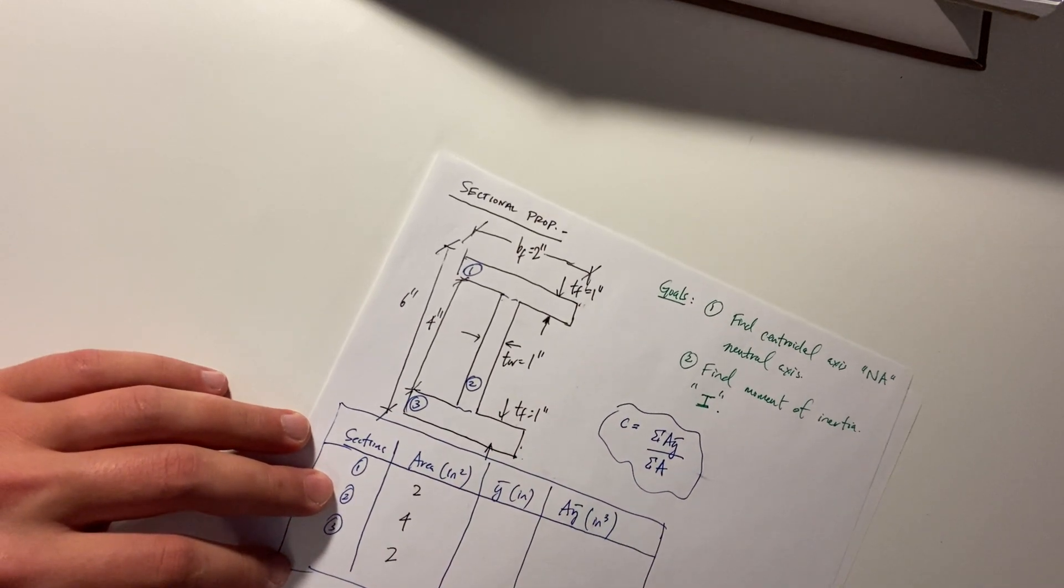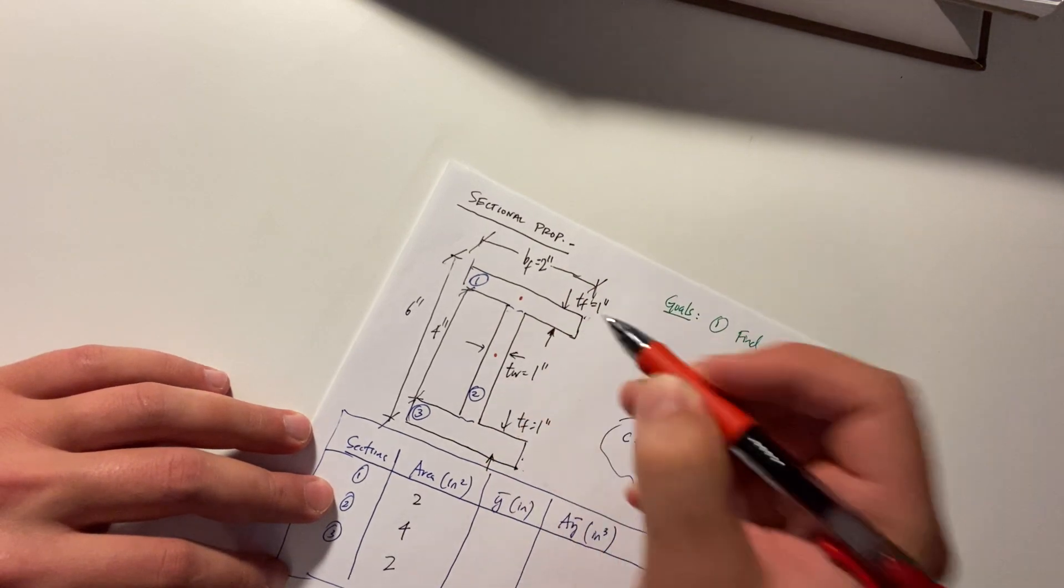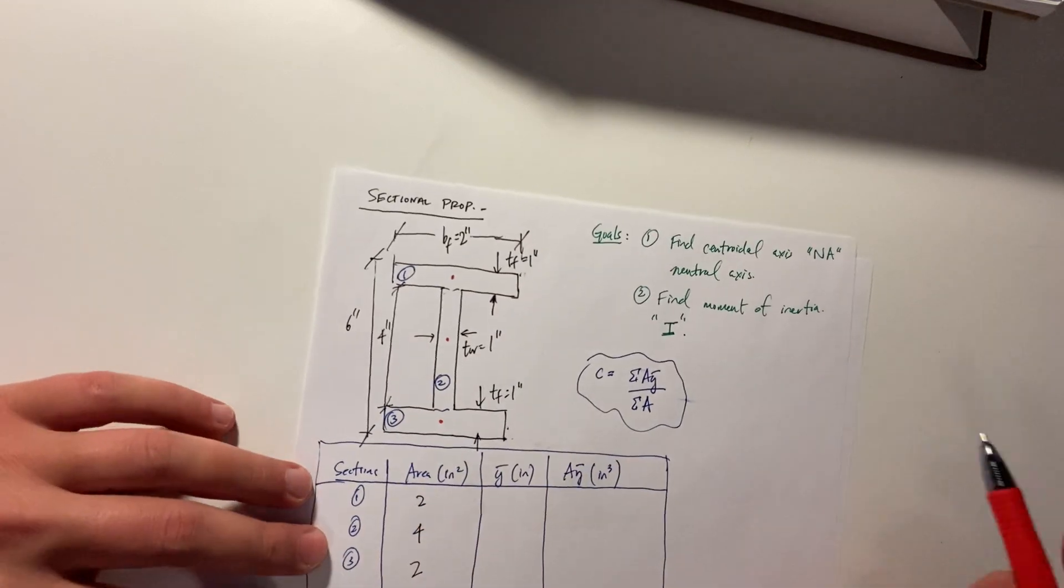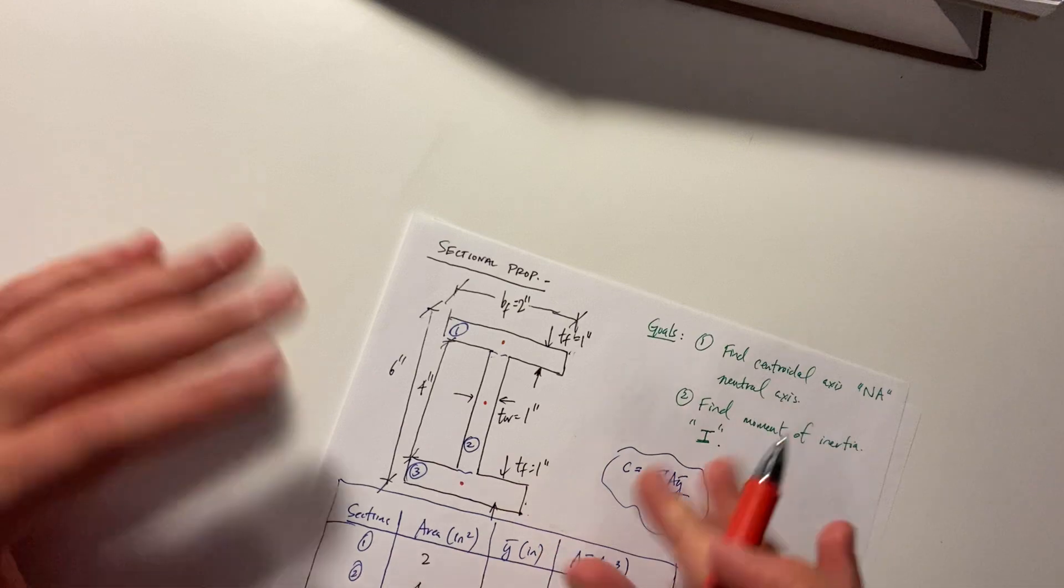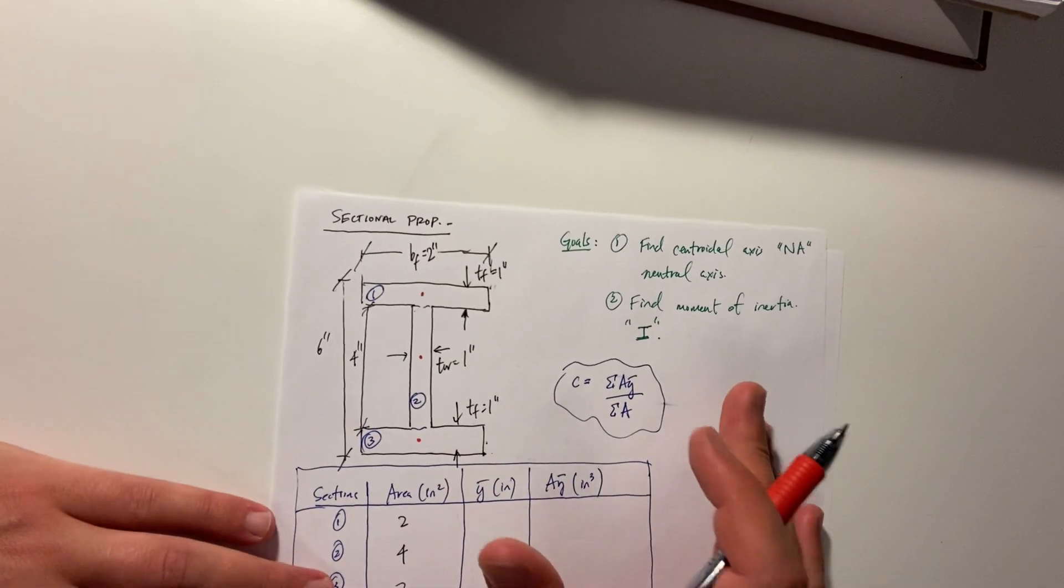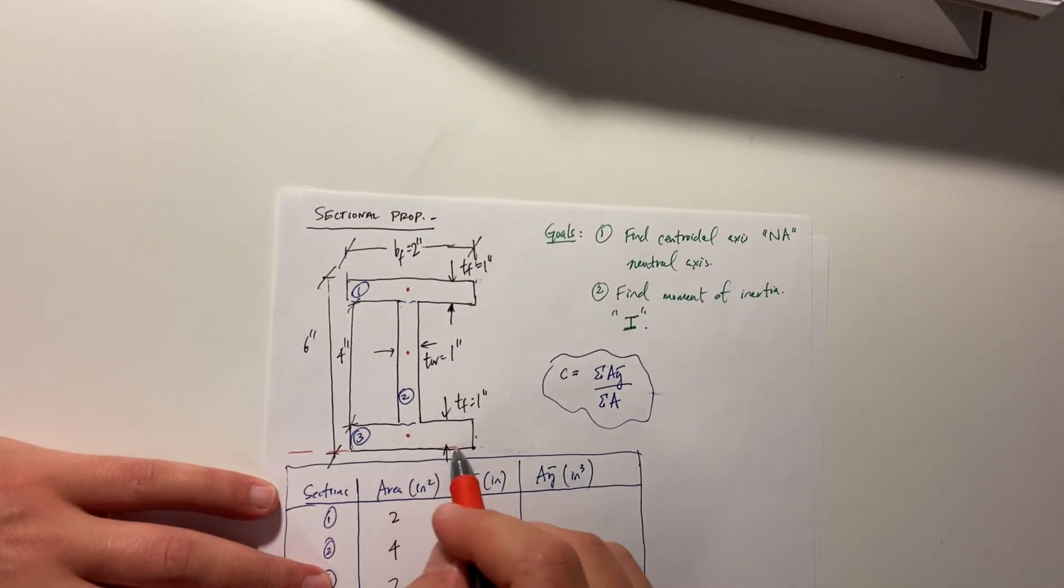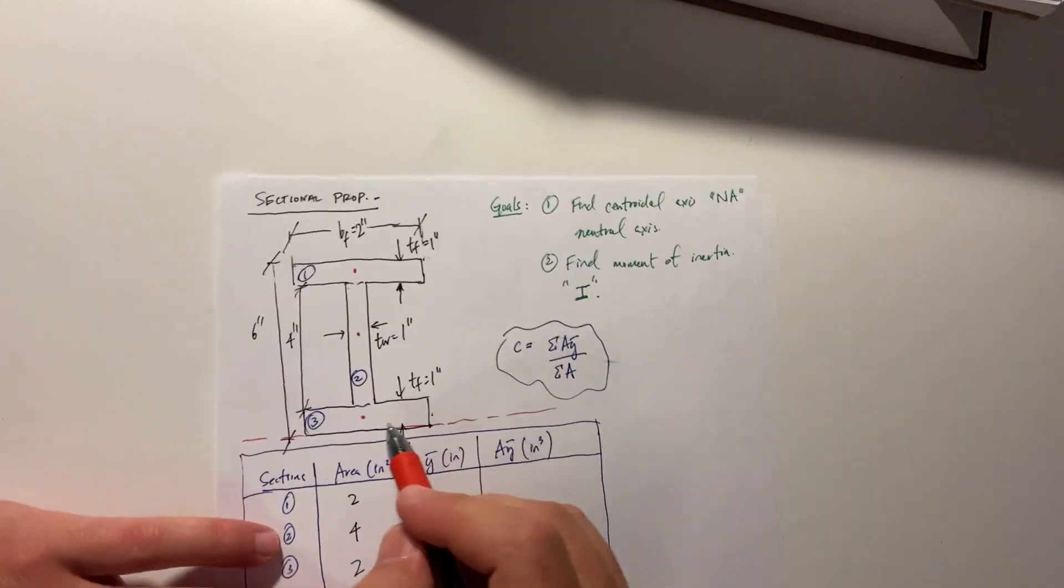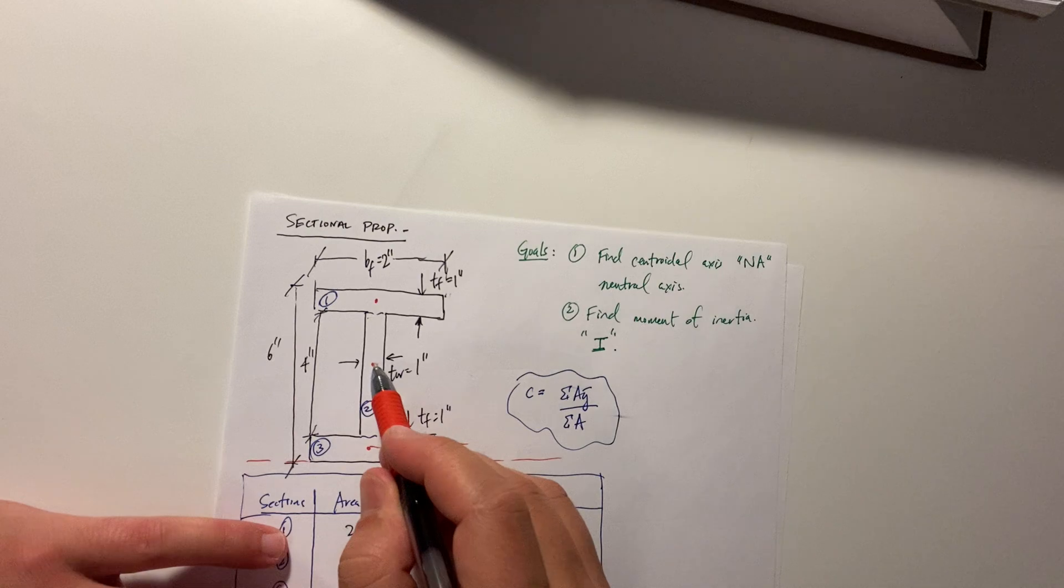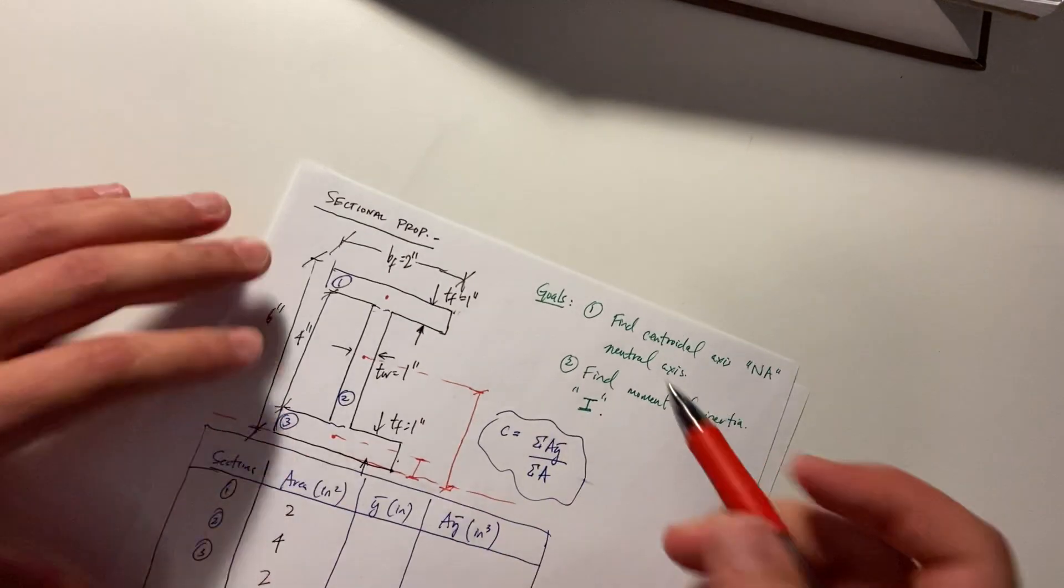Y bar. What's Y bar? Well, Y bar is the center of each section from a reference point. You can do it from the top or the bottom. Doesn't matter as long as you're consistent. You'll notice that's a common theme in engineering. You can do whatever you want as long as it's consistent. I like to do it from the bottom because that's how I've always done it.